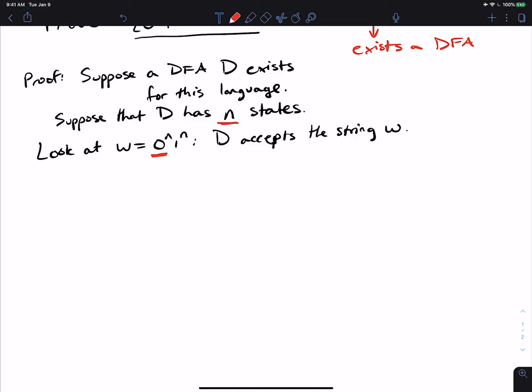Because there are n states, then that means that when we execute those n transitions corresponding to the zeros, there must be a repetition. So there must be a repetition in the zero part.